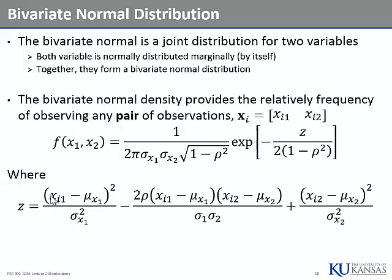This bivariate formula gives us the height for both observations given all the parameters. Pi is 3.14, a constant. Sigma-X1 is the standard deviation of X1, sigma-X2 is the standard deviation of X2, rho is the correlation — that's three parameters. Down in the exponent Z is a placeholder for an expression involving mu for X1 and mu for X2. In total we have five parameters: two means, two standard deviations, and one correlation.